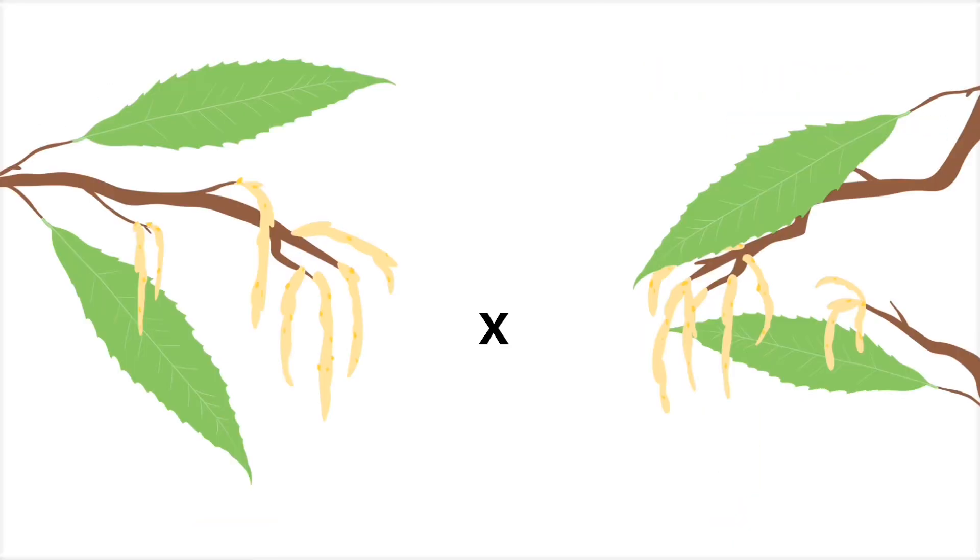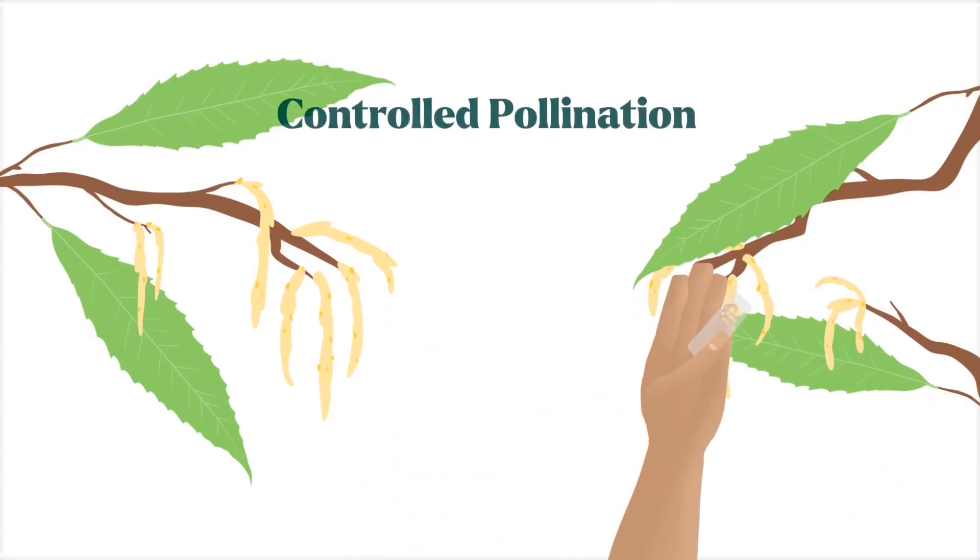We breed these best parent trees together by collecting pollen from one and applying it by hand to the flowers of another. This is called controlled pollination.